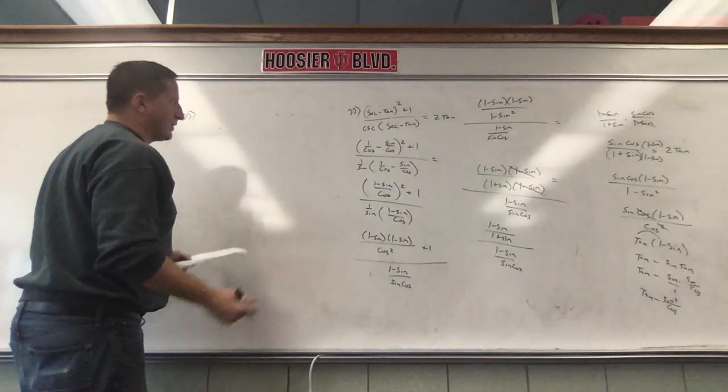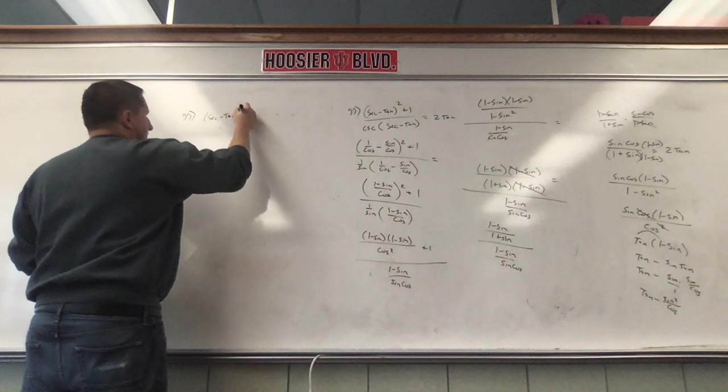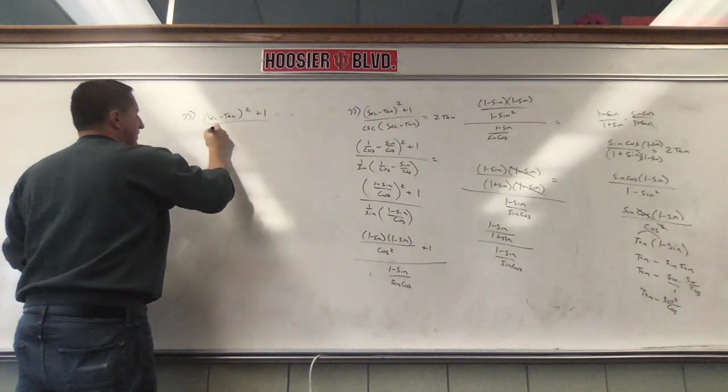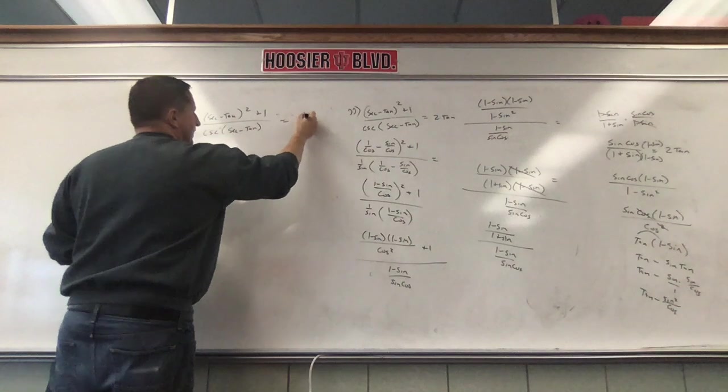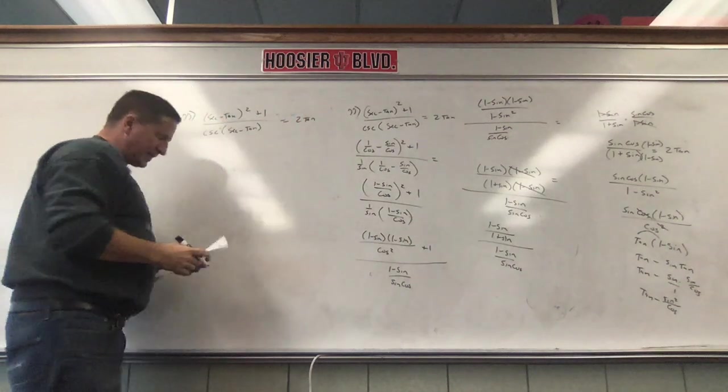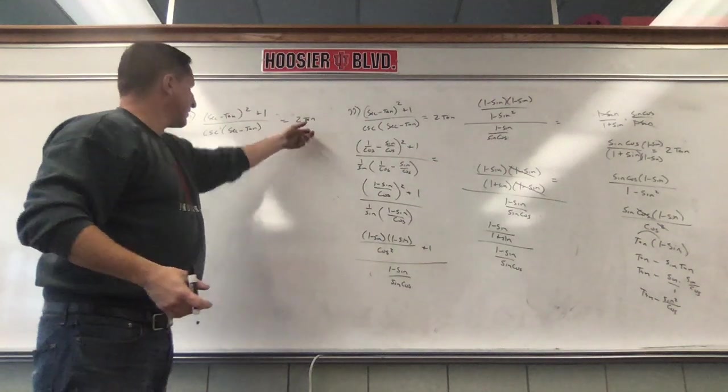Number 77, this is the only one on this video. We have secant minus tangent squared plus one over cosecant secant minus tangent equals two tangents. I tried to make everything sines and cosines and all that stuff. That was stupid. Because we don't want any sines and cosines.